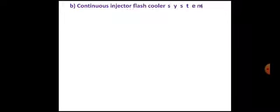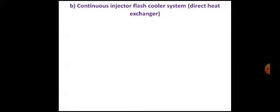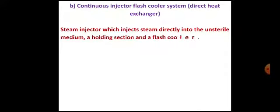The second type of continuous sterilization system is the continuous injector flash cooler system, also called the direct heat exchanger. The difference from the earlier indirect type is that in this system there is direct injection of steam into the unsterile medium.